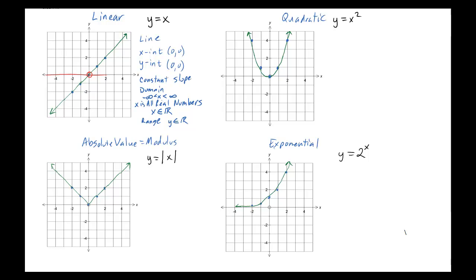Let's move on to the quadratic. The name is quadratic, and the general parent function is y equals x squared. The shape is a U-shape, which has a special name: it's called the parabola. Remember that it is curved at the bottom — it's not pointed like the absolute value is. The x-intercept and y-intercept both occur right at (0, 0), which is where it touches the x-axis and crosses the y-axis.